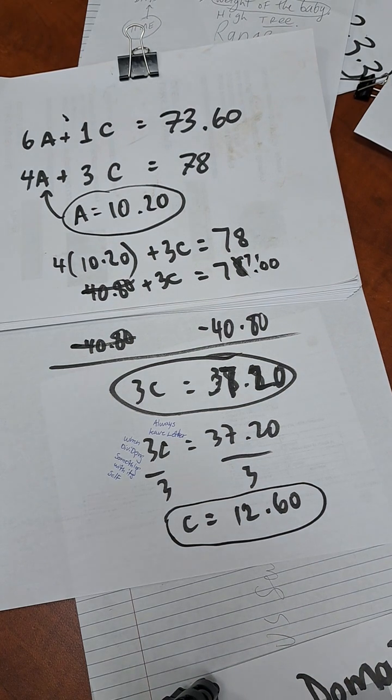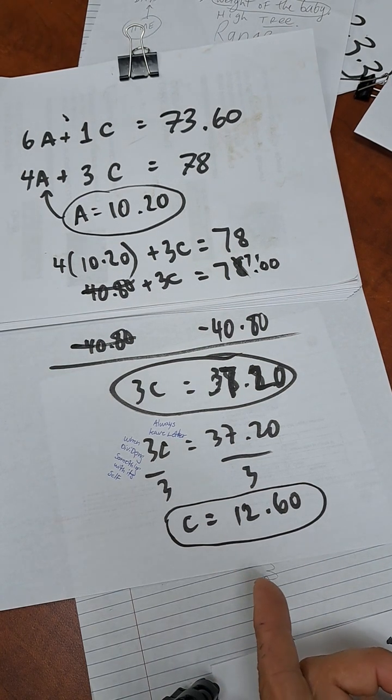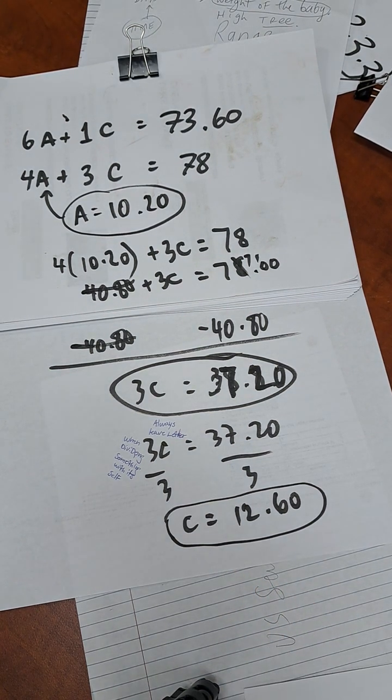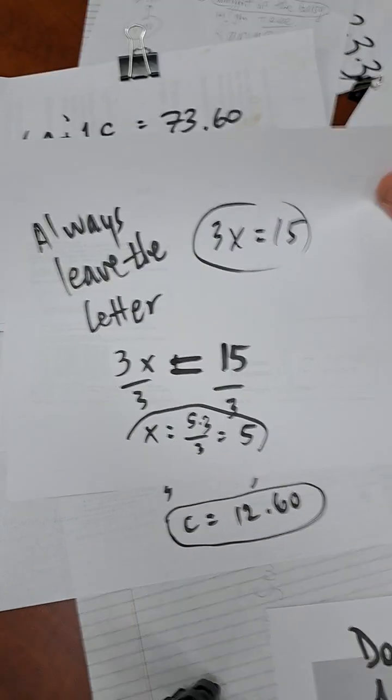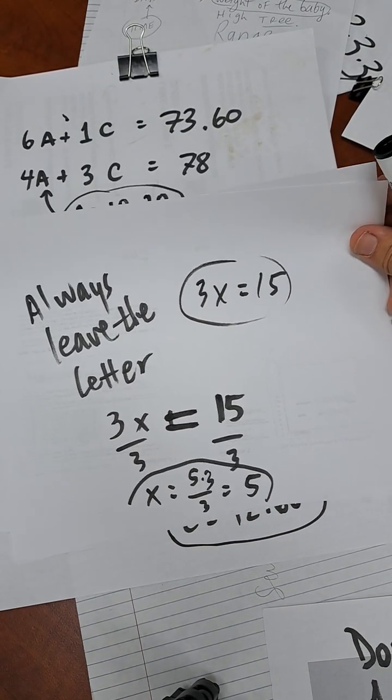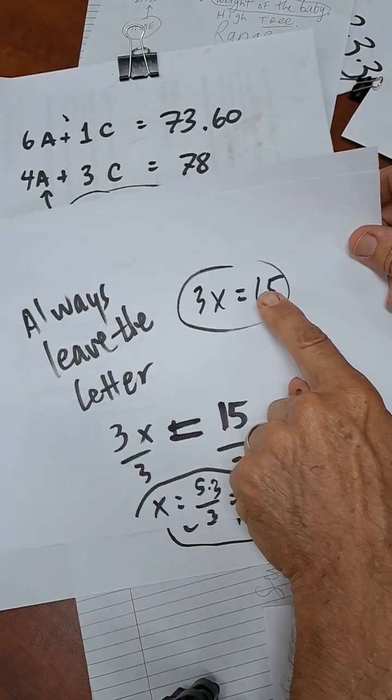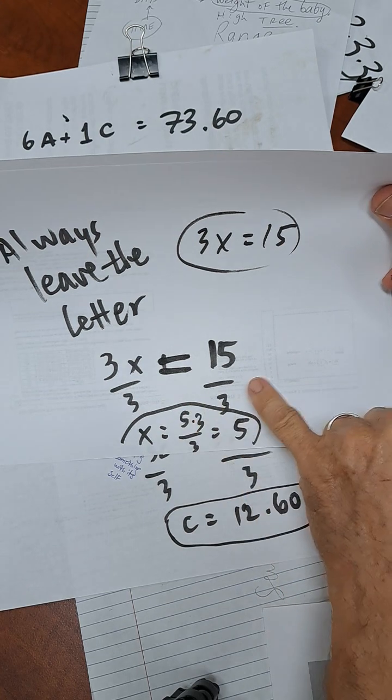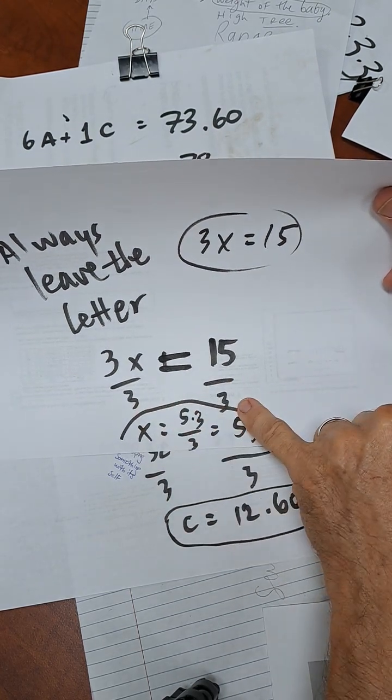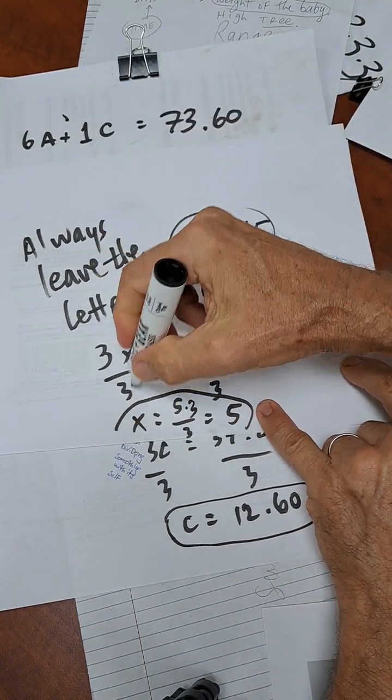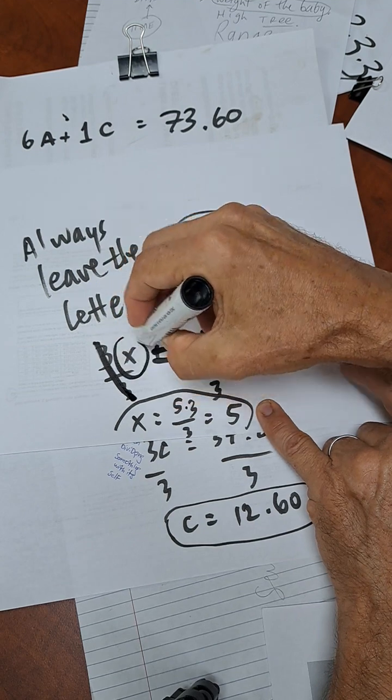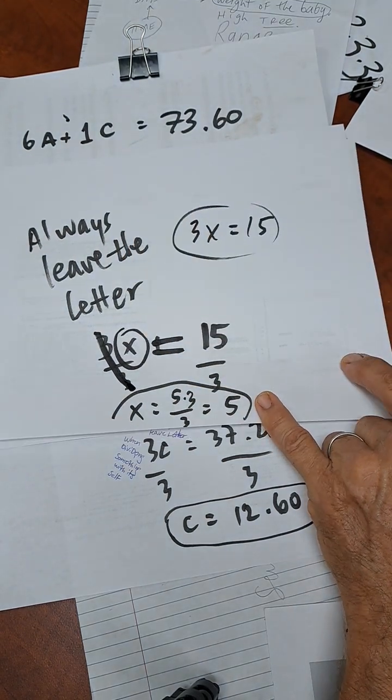The question I find interesting is this statement, always leave the letter. If we have 3X equals 15, what do we do? We divide both sides by 3. That allows us to cancel and leave the letter, which is a good rule.